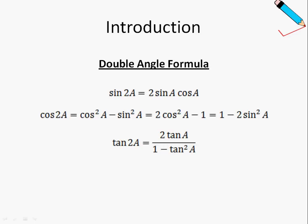So what's the double angle formula all about? We will be looking at three forms of the formula: the sine formula, the cosine, as well as the tangent double angle formula. The sine double angle formula is given as sin 2A equals 2 sin A cos A.